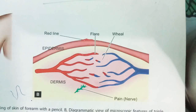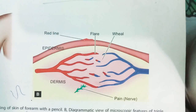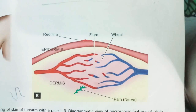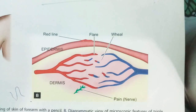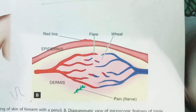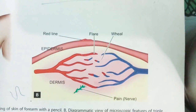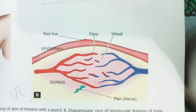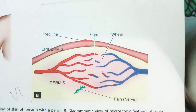By stroking with the blunt point, a red line appears within a few seconds — this is the first stage, occurring due to vasodilation. After some time, a flare is seen: a reddish flush surrounding the red line, also resulting from vasodilation of adjacent arterioles. Finally, a wheal forms — swelling or edema of the surrounding skin — occurring due to transition of fluid into the extravascular space.